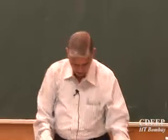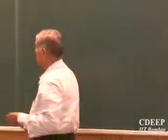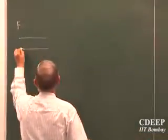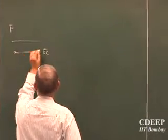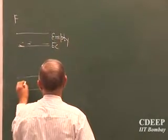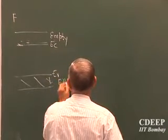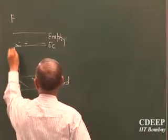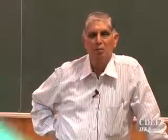We were looking into the band diagram. There is a band called the conduction band, where the energy is called EC, and the valence band energy is called EV. In between, there are no states where electrons or holes can occupy. This is called the bandgap.